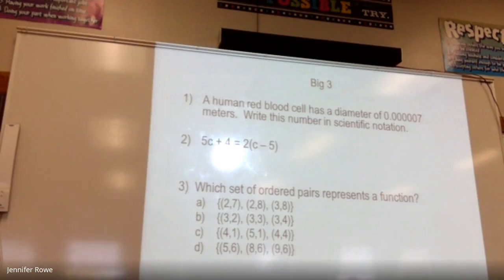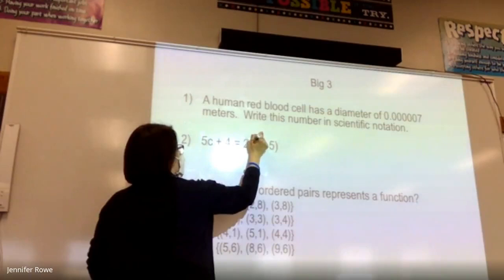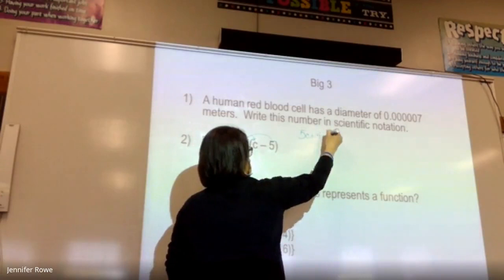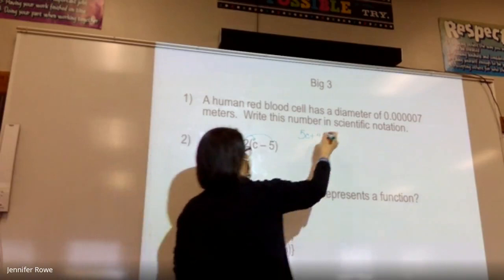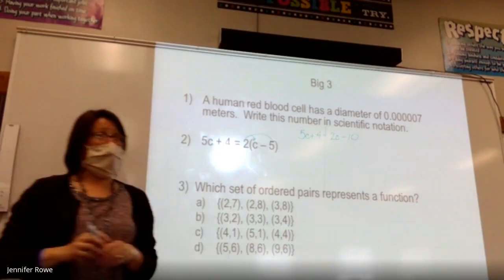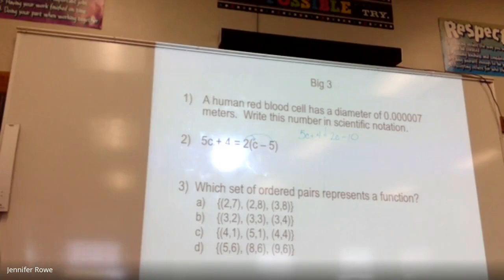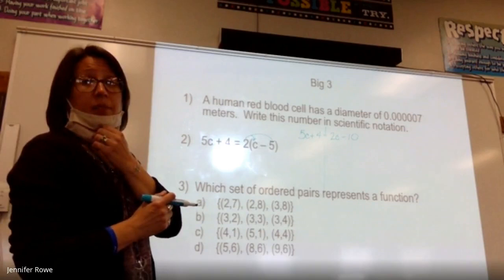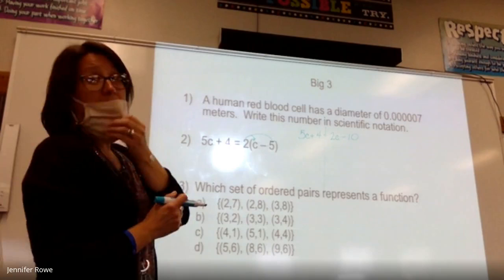Distributing — when it's in a problem, it must happen first, regardless. So I'm going to distribute. When I distribute, somebody already told me I multiply. So I'm going to copy this side. What's two times c? Two c. What's two times negative five? Negative ten. Good. Now I'm going to drop my line.